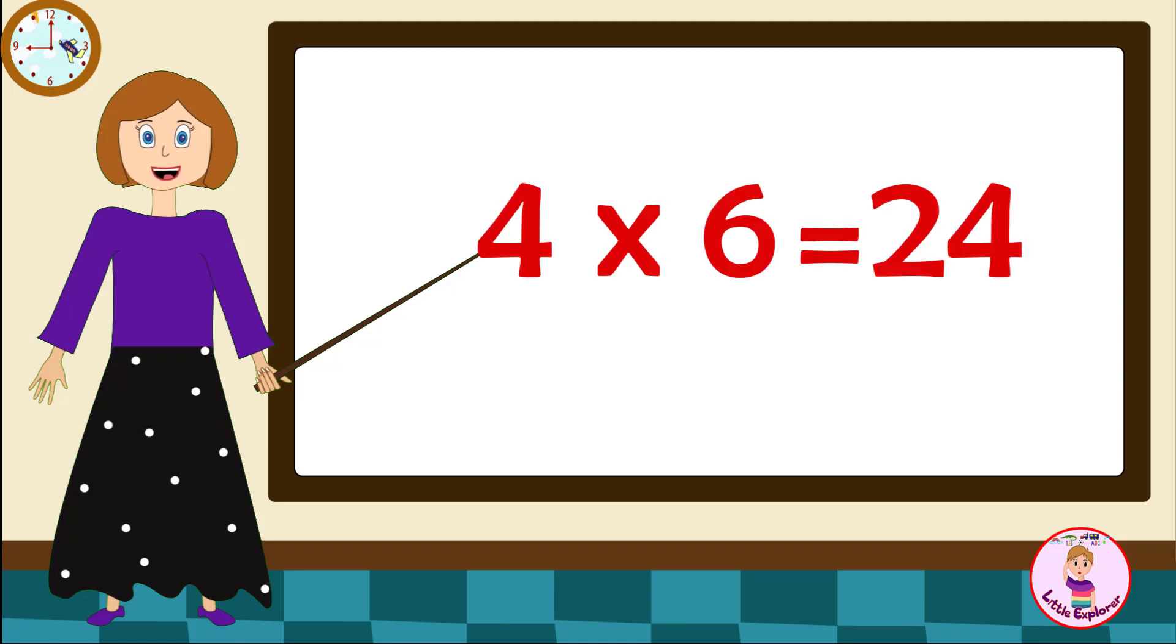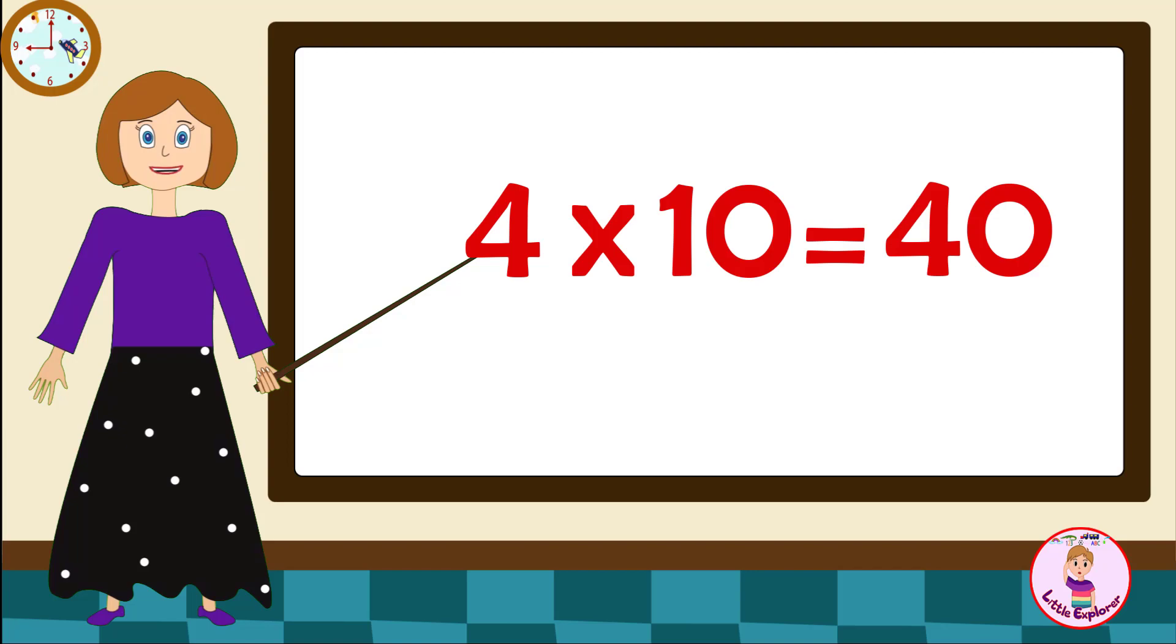Four sixes are twenty-four. Four sevens are twenty-eight. Four eights are thirty-two. Four nines are thirty-six. Four tens are forty.